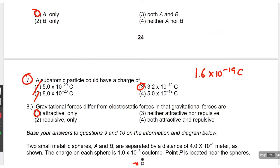Okay, a subatomic particle. Remember, all charges must be a multiple of that number. These two are too small because it's negative 20. This is two times 1.6 is 3.2.